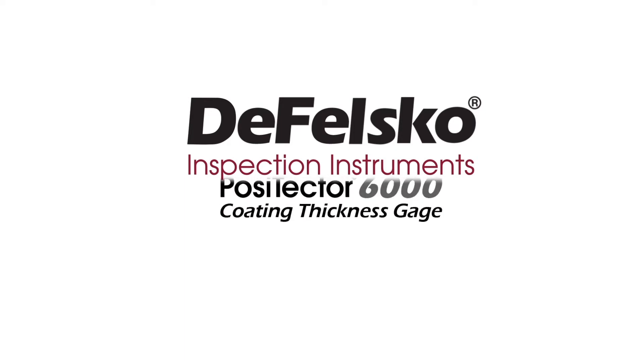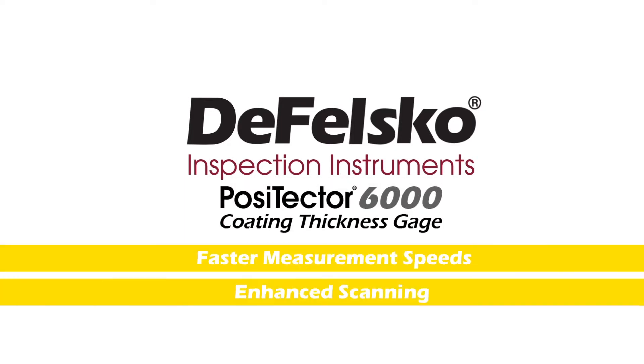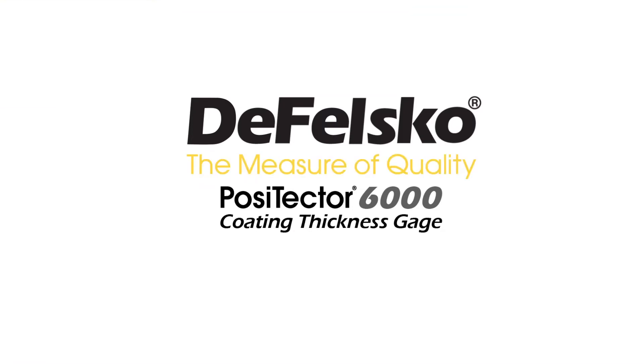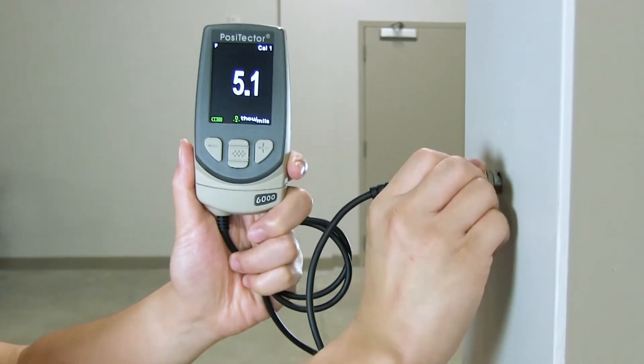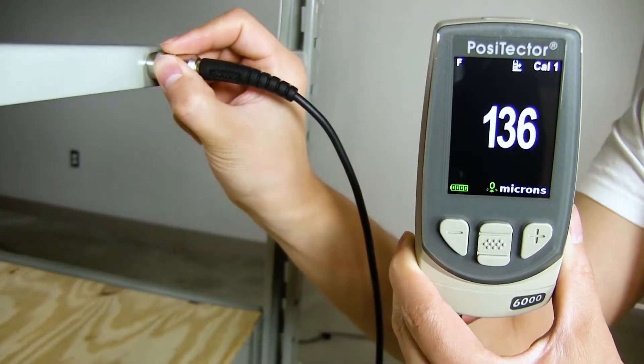Introducing faster Positector 6000 coating thickness measurement speeds and enhanced scanning capabilities from Defelscope. The measure of quality. Today's coating inspectors and applicators are expected to thoroughly evaluate coating thickness over large areas and take many measurements.